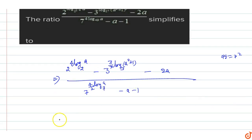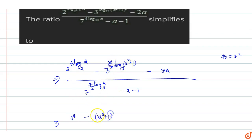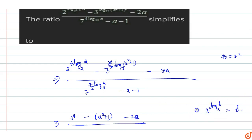This simplifies to 2 to the power 4 giving a raised to power 4, minus the 3s cancel out giving us the value of a squared plus 1, result of the value of a squared plus 1 minus 2a. This second term equals 1, so we get 1 minus 3 to the power of a squared plus 1.